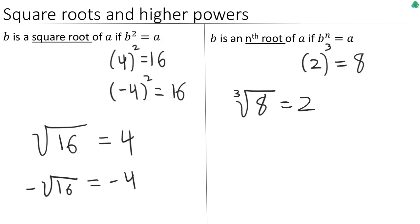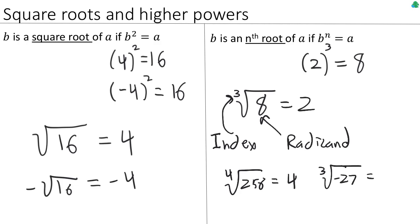There's a little bit of terminology to know here. The number in that upper left corner that tells us what kind of root it is, is called the index. And the number that is actually inside the radical itself is called the radicand. And just to give you a couple more examples, if we did the fourth root of 256, that happens to be 4. If we did the third root of negative 27, that happens to be negative 3.